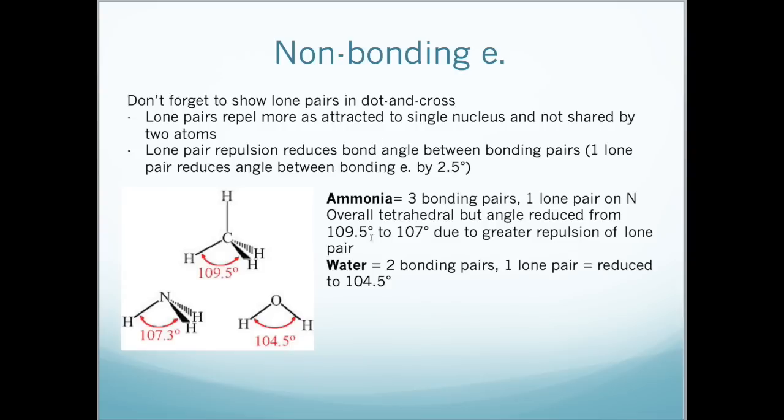Here I have an example of ammonia. We have the central nitrogen atom and three hydrogens bonded to it. Three bonding pairs but we also have one lone pair on the nitrogen which I didn't put on. So overall the shape is tetrahedral, but the angle is reduced from 109 to about 107 degrees because of the greater repulsion from the lone pair.